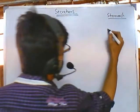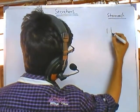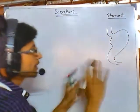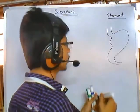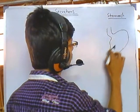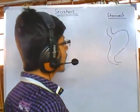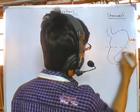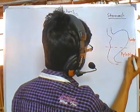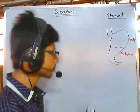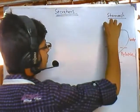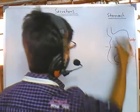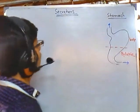Let me draw a stomach here first. This is the structure of the stomach — it doesn't actually look exactly this way, but you can divide the stomach into different sections. This part is called the body, and this is called the pyloric region — the body section and pyloric section of the stomach. This is the duodenum region and this is the esophageal region, the connecting region in between.